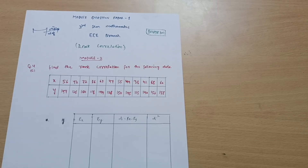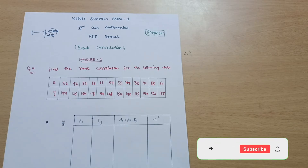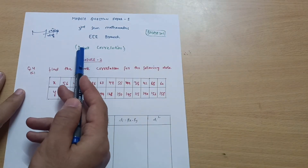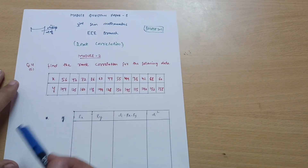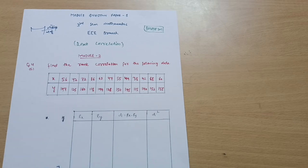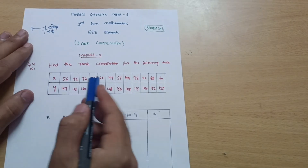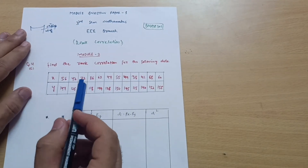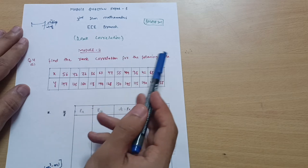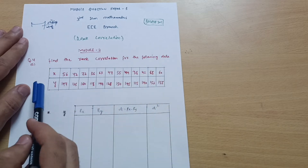Hello everyone and welcome back to my channel. We are discussing the model question paper for the mathematics subject. So far we have discussed the values of problems — the link is in the description box. We have already discussed one problem for rank correlation. In this problem it is a little bit different because there are two numbers which are repeating two times, so there is a specific procedure we will follow. Find the rank correlation for the following data.